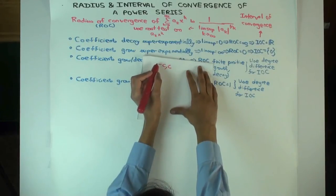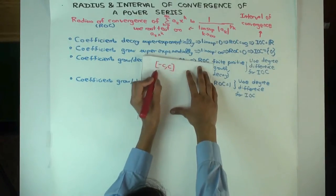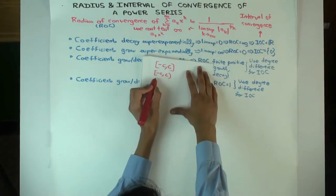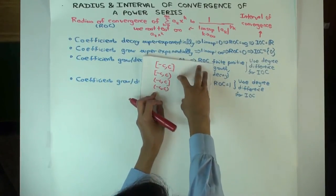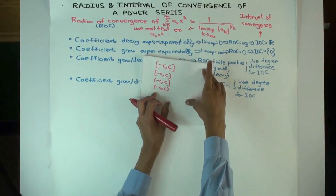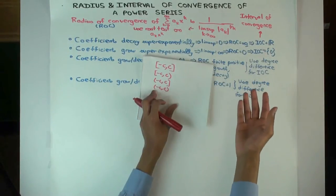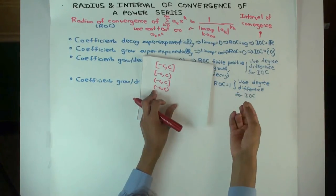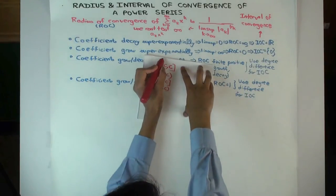What you don't know after finding the radius is whether the endpoints are included. The interval of convergence could be open on one end, closed on the other, or open on both ends. So after you find the radius of convergence there are four possibilities for the interval of convergence, if the radius is finite. If the radius of convergence is infinite, the interval of convergence is all of the reals. If the radius of convergence is zero, the interval of convergence is just the single point zero — assuming centered at zero.